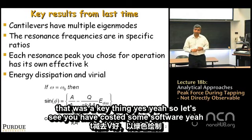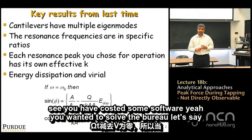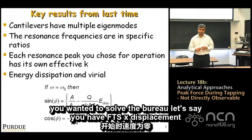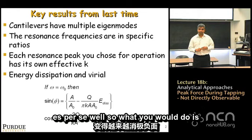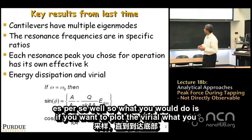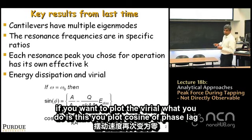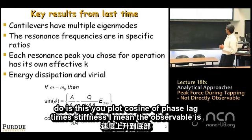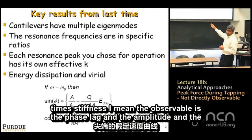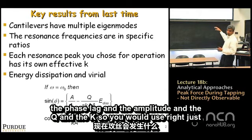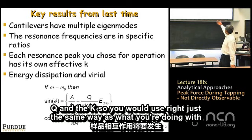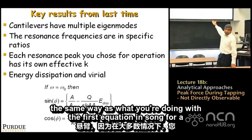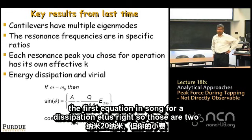A student asked how to solve for the virial in processing software. The observable quantities are the phase lag, amplitude, Q, and spring constant k. You would plot cosine of phase lag times stiffness to get the virial, just as you solve for energy dissipation using the first equation. These are the two important quantities extractable from a tapping mode experiment.